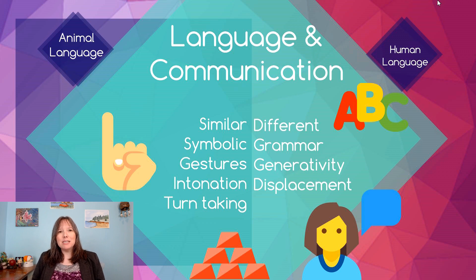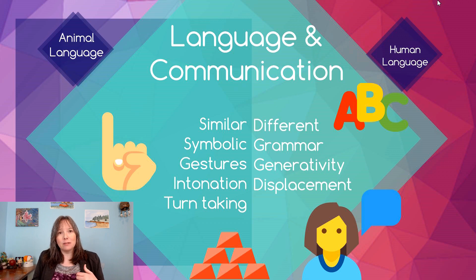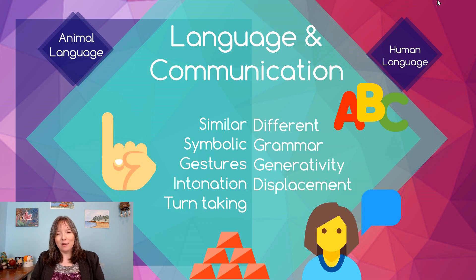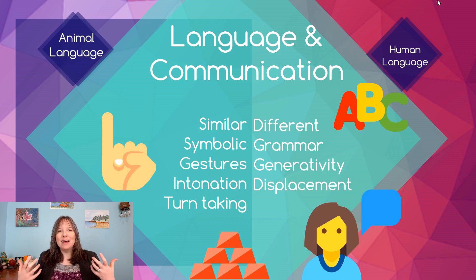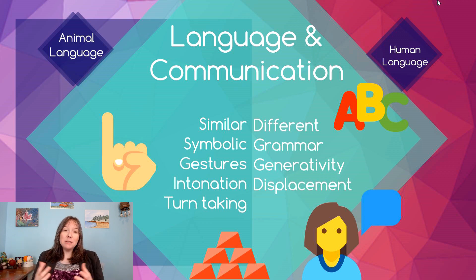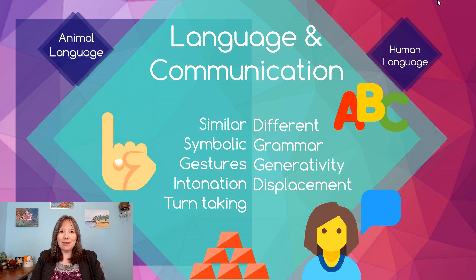The final difference is displacement. Displacement is the idea that in true language we can talk about things that are not concrete or are concrete but not present. We can have symbolic meanings for things like justice, yesterday, next year, last century, truth, or morality. Animal communication cannot talk about yesterday or last year — they have to live in the moment. If I say 'Christmas tree,' you understand what I mean even though there are no visuals of that present.